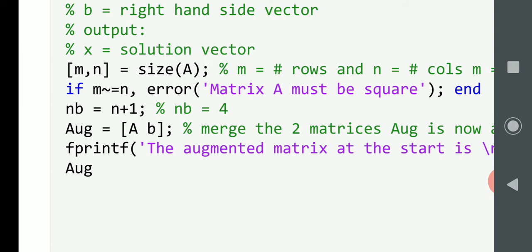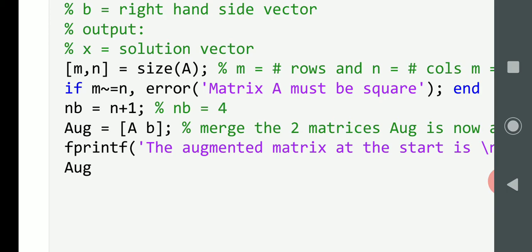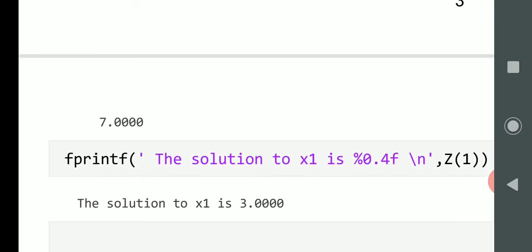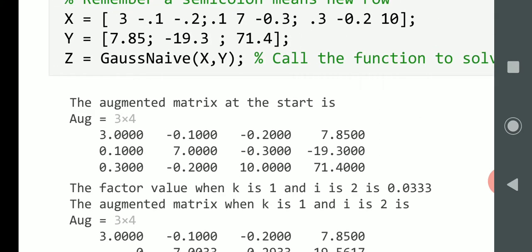fprintf, the augmented matrix at the start is AUG there. Last line there. So, let's just go back up and just have a little look at that. So, there's the augmented matrix before we do anything. 3, minus 0.1, minus 0.2, 7.85, 0.17, minus 0.3, minus 19.3, 0.3, minus 0.2, 10 and 71.4. And remember that is a 3 by 4. So, we start off with a 3 by 3 and the right-hand side, the 7.85, the minus 19.3 and the 71.4. We merge that into one matrix.